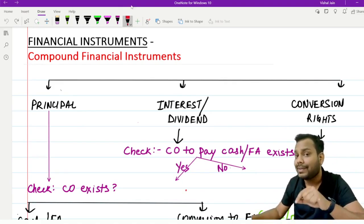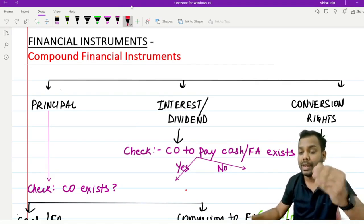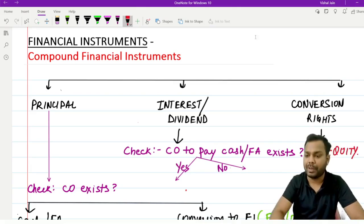Conversion rights. This right gives the instrument holder the right to convert the instrument to equity. That's why it is equity. So this strip will always be equity.